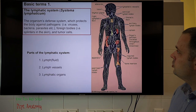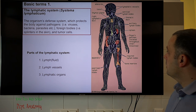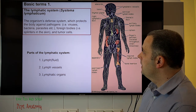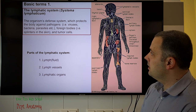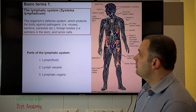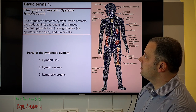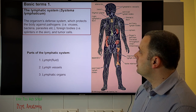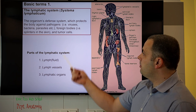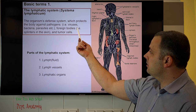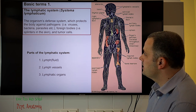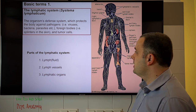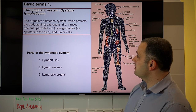This slide shows a summary of the most important lymphatic organs. The lymphatic system is a defense system which protects the organism against foreign pathogens — viruses, bacteria, parasites, and foreign bodies — and even cancer cells may be eliminated by the lymphatic system.